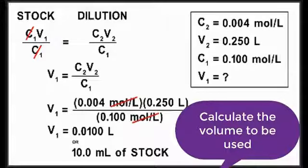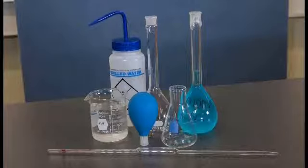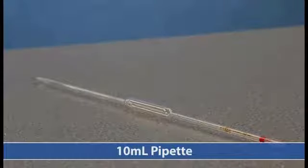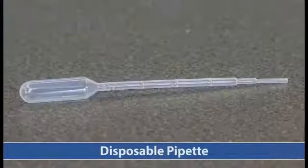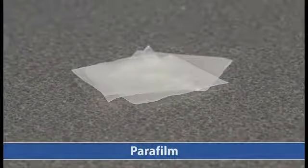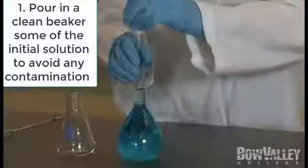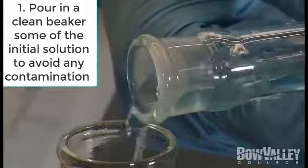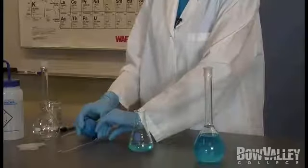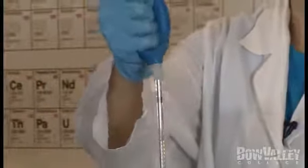We will first need to determine the amount of stock solution required. To prepare the dilution, we will need the following materials: stock solution, a 10 ml pipette, pipette bulb, Erlenmeyer flask, distilled water, disposable pipette, parafilm, and a volumetric flask. Since we do not want to contaminate the stock solution by directly inserting our pipette, a small amount is first transferred to an Erlenmeyer flask.